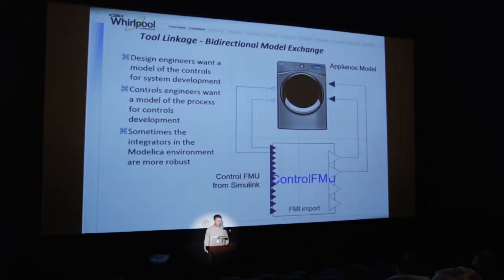The first application is tool linkage. This is something we would have formerly done with an S-function from Simulink — taking a physical system model and embedding it with a control simulation for controls development. Today we're able to do this in a bidirectional way. If we're working on developing the physical system model, we still need a control model to understand system behavior. The controls engineer wants access to the physical model to work on optimizing the control system. This is usually a back-and-forth process, and this type of tool linkage facilitates that way of working.